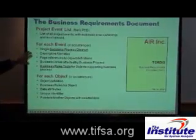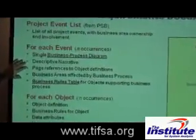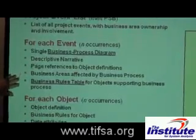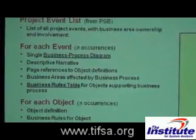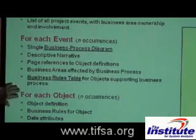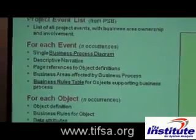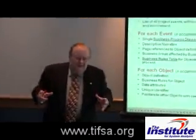You're going to have a business process diagram — a picture. There's going to be a narrative. There's going to be references to objects and data. You're going to have the business areas, the organizational units that are affected by that business process. You're also going to have a table that supports the data from which we're going to draw the business rules in this document as well. And for each of these objects, an object is a collection of data.